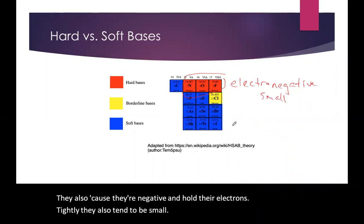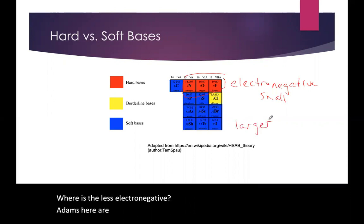Whereas the less electronegative atoms here are a little larger. So this is all a sort of a relative comparison, and that's always the case in hard and soft acids and bases. Usually speaking in relative terms, comparing one atom to another.